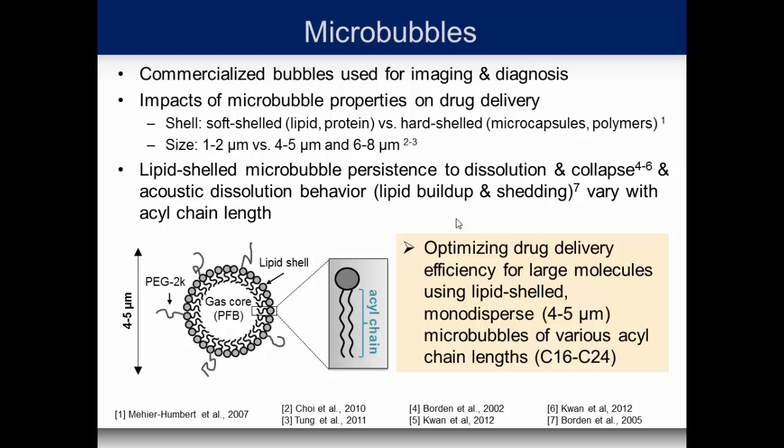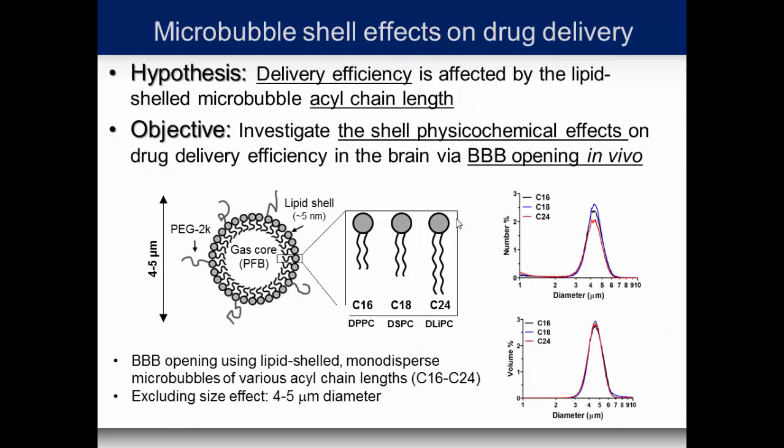Overall we want to optimize drug delivery and see whether changing the acyl chain will have any effect in getting molecules of different sizes through. We want to keep everything else constant including the size, so we use our lipid shell monodispersed bubbles but change to three acyl chain lengths. The hypothesis is that the lipid efficiency will be affected by the acyl chain length, and we want to investigate the different physicochemical effects on efficiency via blood-brain barrier opening.